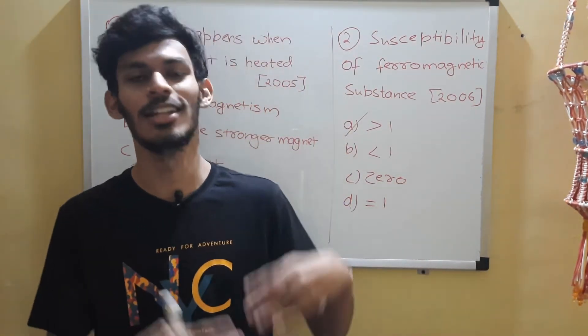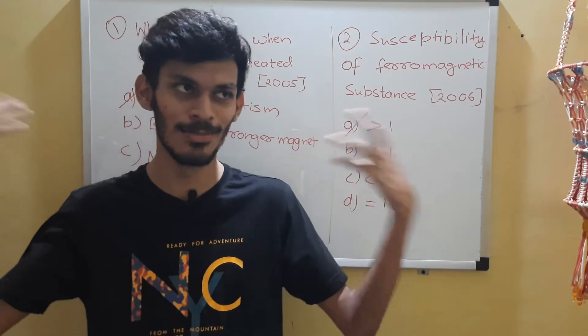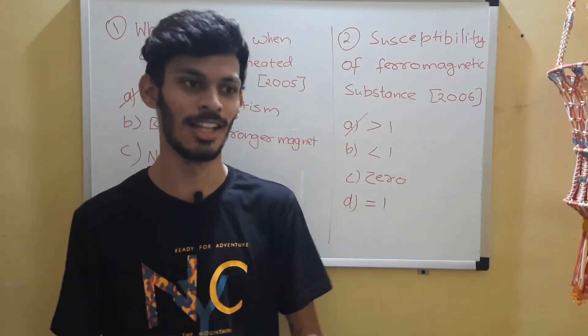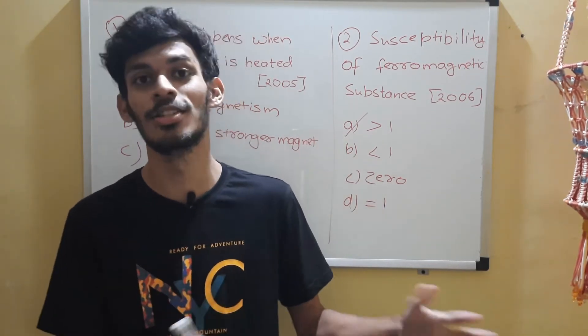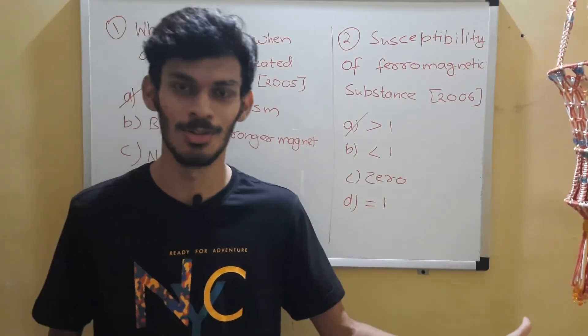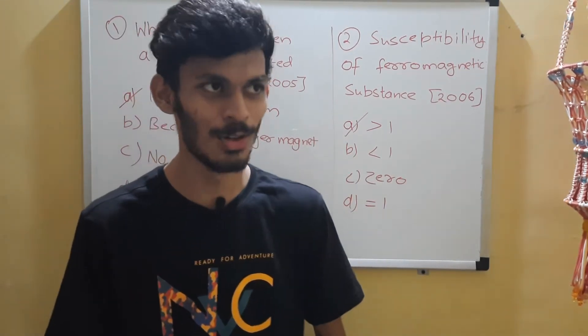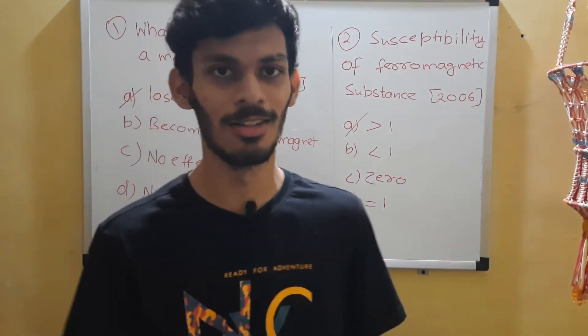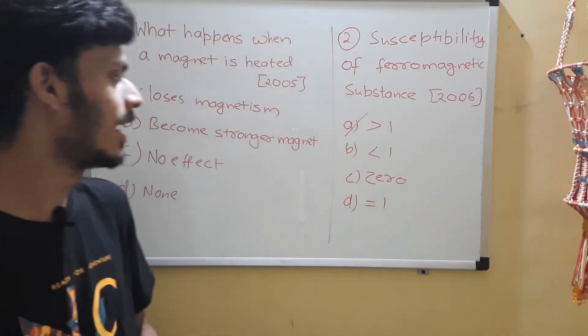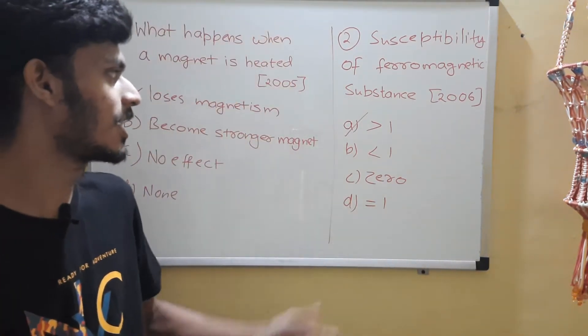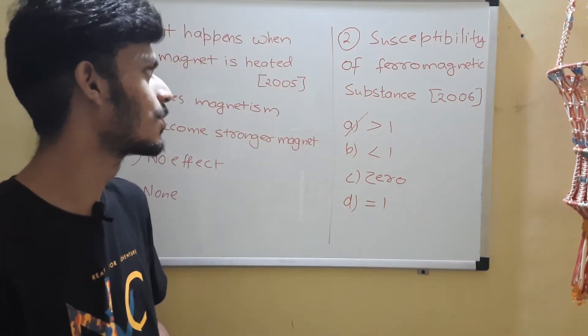It is quite clearly mentioned in your NCERT that susceptibility of a ferromagnetic substance is greater than 1. It's positive and in fact much greater than 1 — it is in thousands or ten thousands.